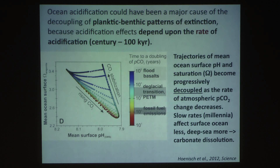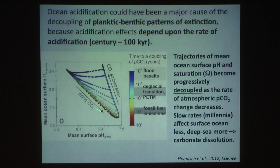So the colors here represent times going from instantaneous to 10^1, 10^2, 10^3, 10^4, 10^5. This is the ratio of flood basalts, say 100,000 years. This is fossil fuel emission, say 100 years. If you plot mean ocean surface saturation for aragonite — calcite shows something similar — against mean surface pH, then you see that if you increase atmospheric CO2 very rapidly, you find a very strong correlation between mean surface pH and mean ocean surface saturation. The slower this goes, the more this gets decoupled. The trajectories of mean ocean surface pH and saturation become progressively decoupled as the rate of atmospheric CO2 change decreases.